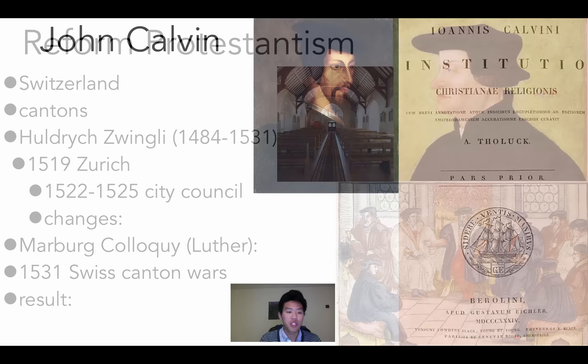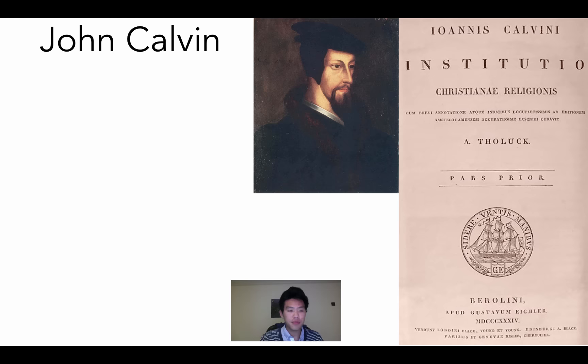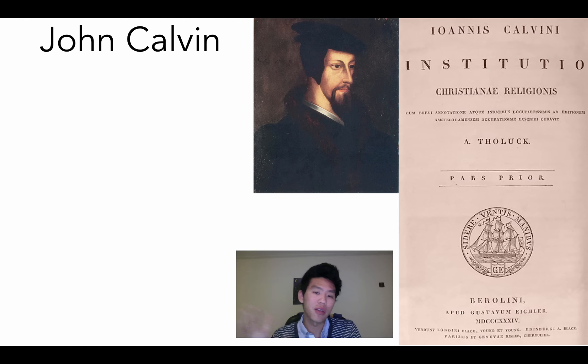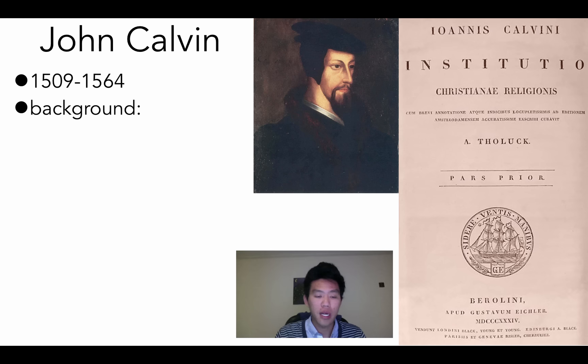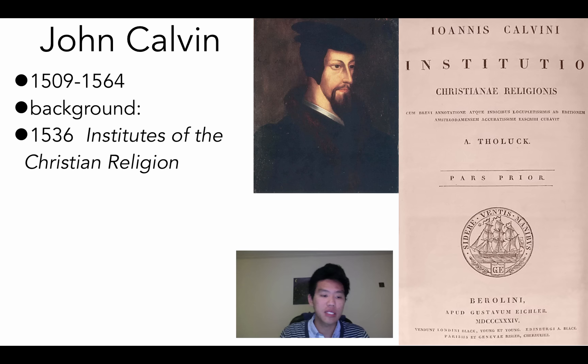Then there's a new figure coming on the scene: John Calvin. He is what we call a second-generation reformer because he comes after Zwingli and toward the end of Luther's time. John Calvin — a French guy, a priest, a lawyer, a humanist — knows Latin, Greek, and Hebrew. He has a whole conversion experience himself at age 24 and joins the Lutheran movement.